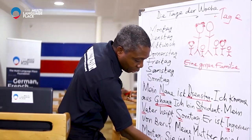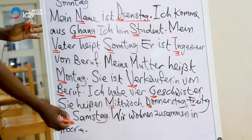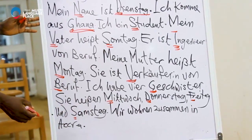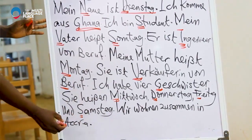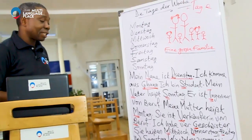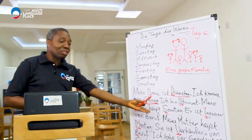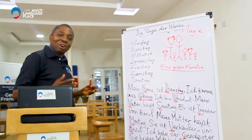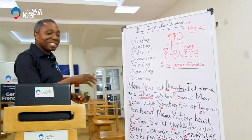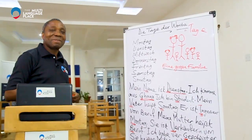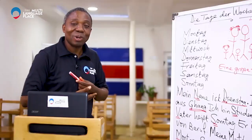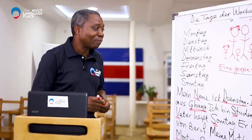If you write a short composition like this and all your nouns are in small initial letters, you can imagine the number of grammatical mistakes you would have made. So let's note that as we talk about this family.